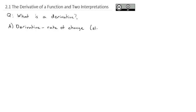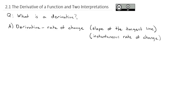One way is we can think about it as the slope of the tangent line, or another way we can think about it is the instantaneous rate of change. Graphically, we've got some curve and we want to know how fast it's changing at a certain point. To measure that rate of change, we draw a tangent line that measures how steep the curve is at that point. At a different point, the tangent line has a different steepness, showing a different instantaneous rate of change.